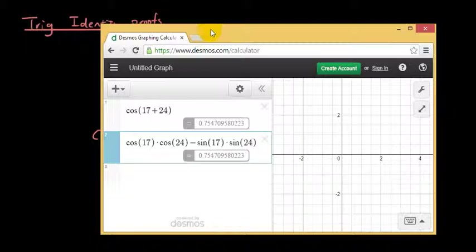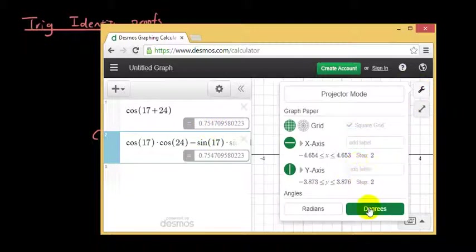So you can see in my Desmos graphing calculator both of these equations equal 0.7547. Don't forget to put your calculator on degrees mode if you haven't done so.